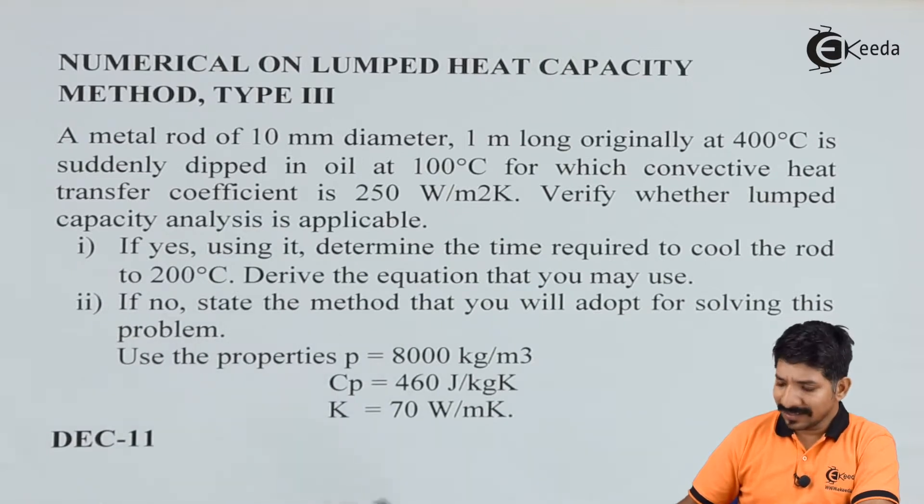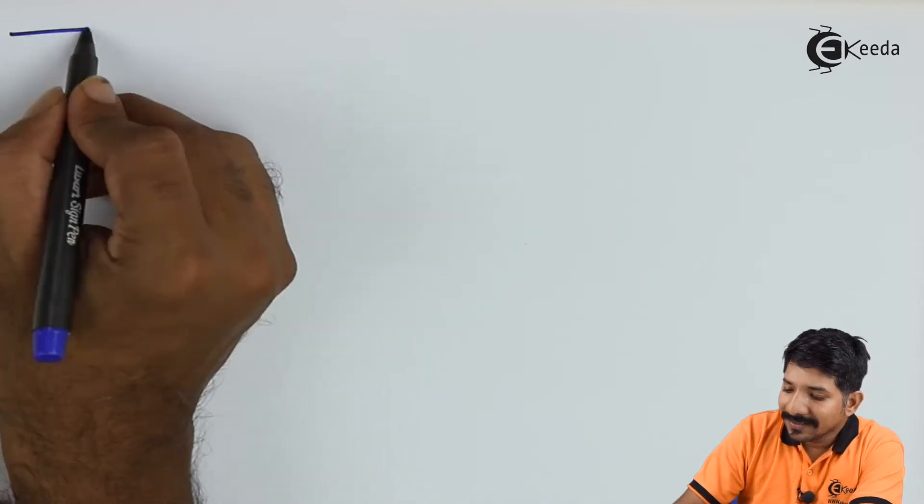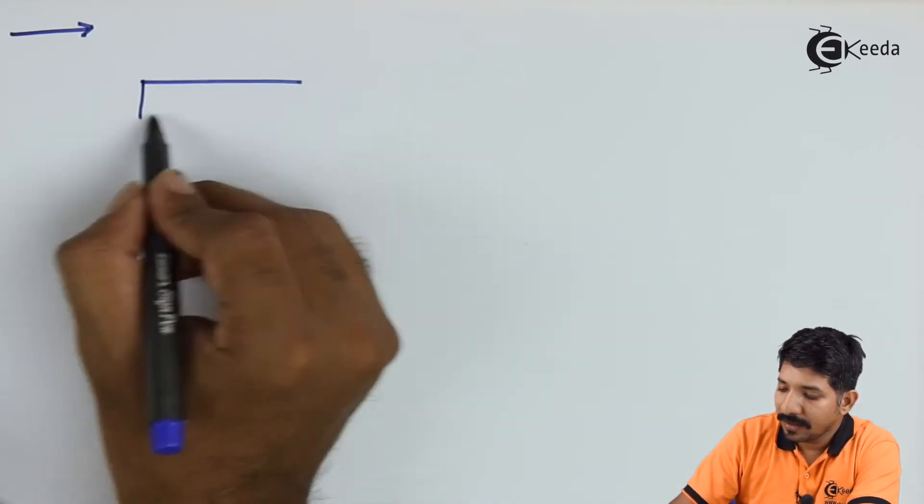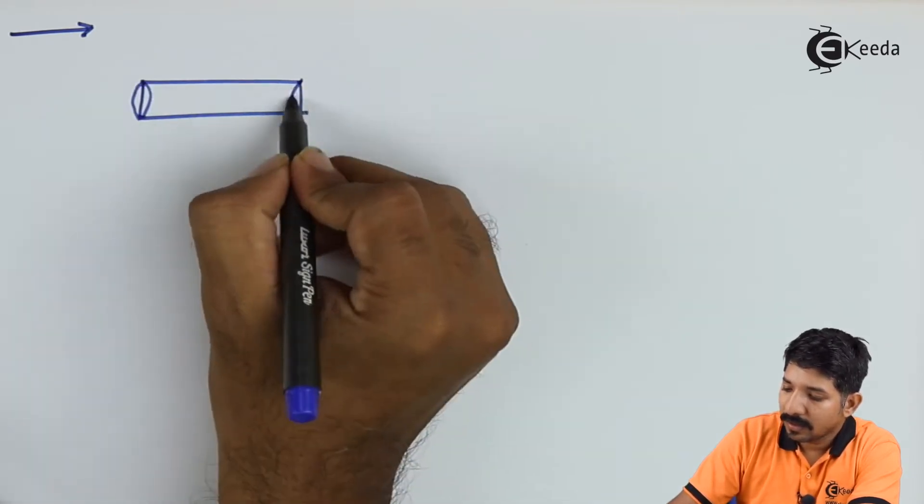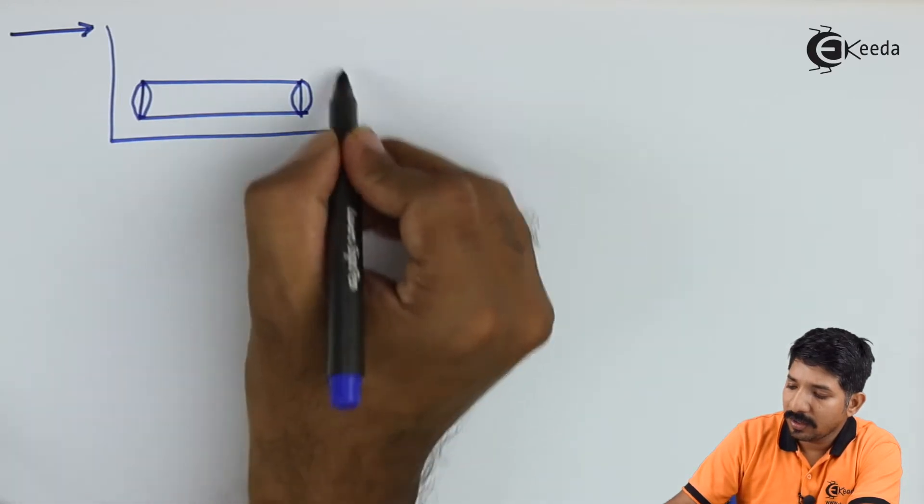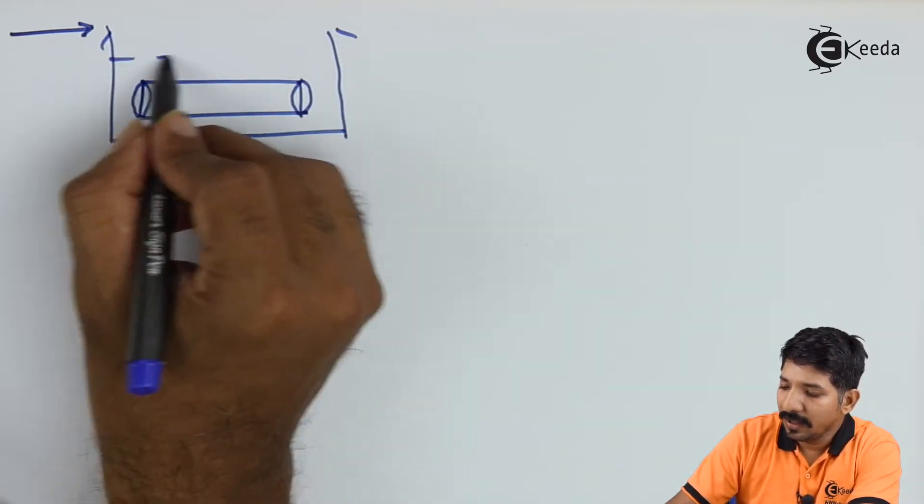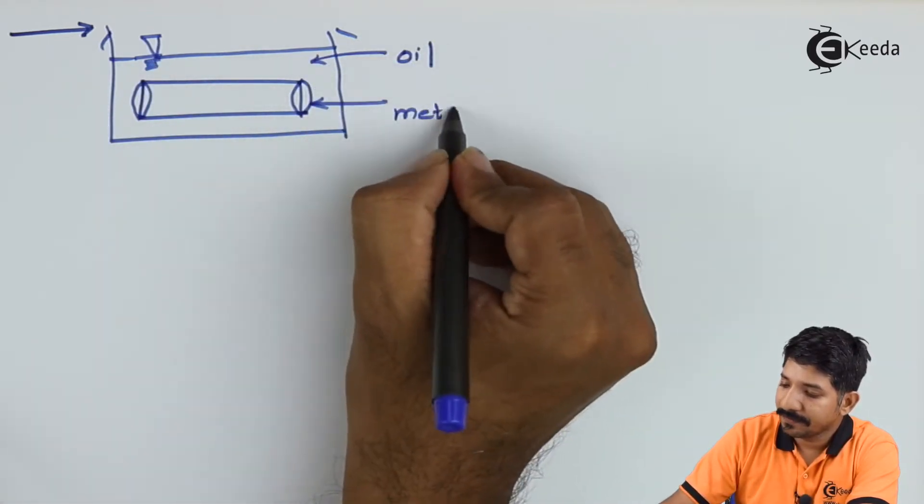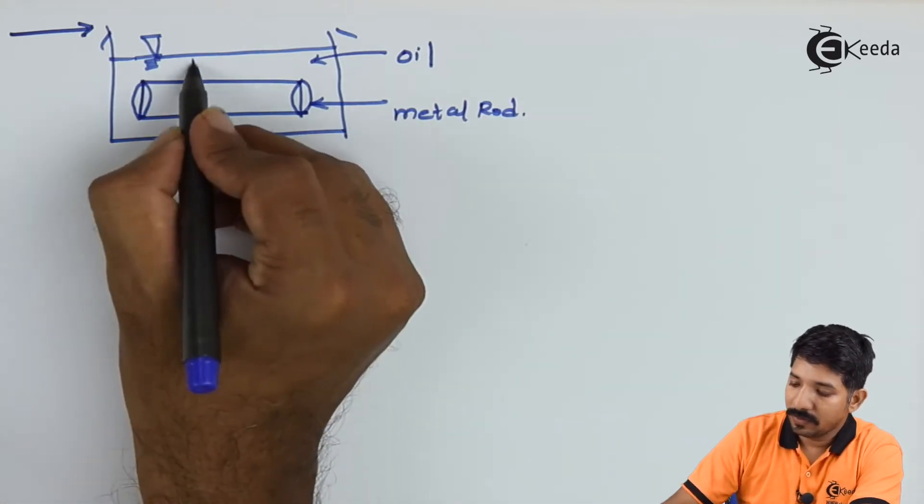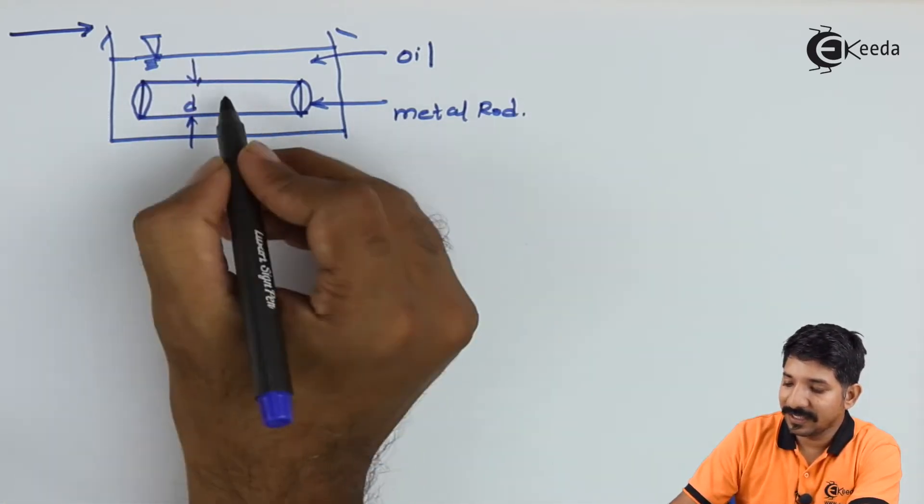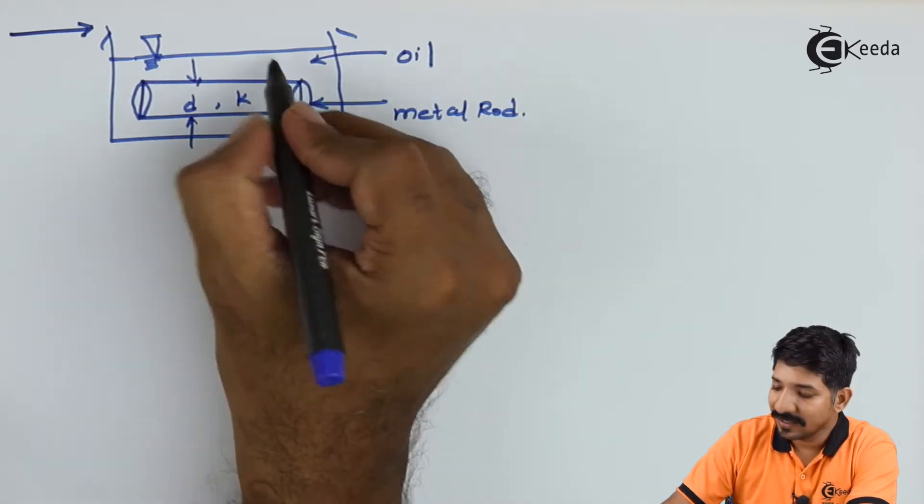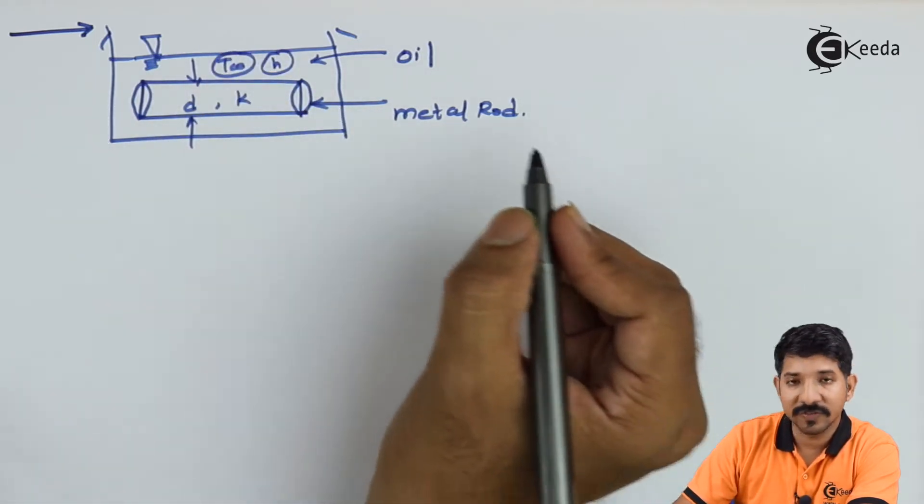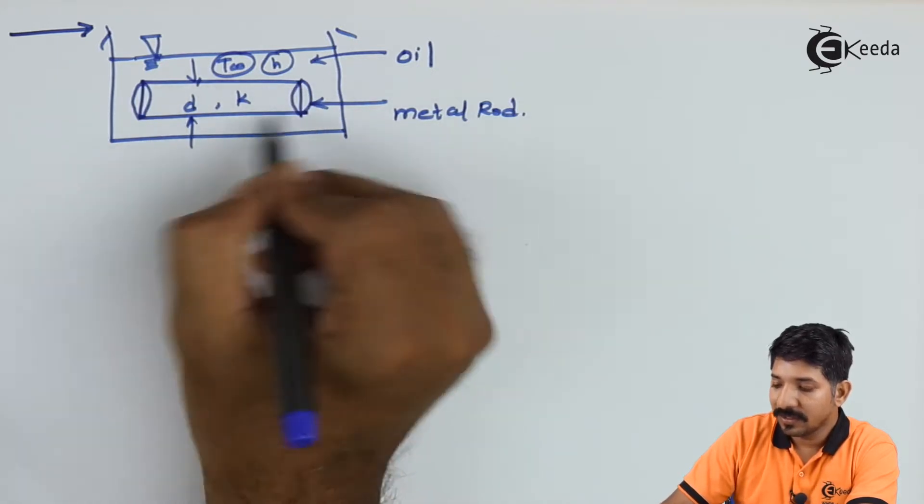So let us start solving the given problem. Let us write down the things that they are given. They have taken a rod and placed this rod inside an oil. This is the oil and this is the metal rod. The rod dimensions are D, the value of K is the thermal conductivity of rod, H is the heat transfer coefficient of the oil, and T infinity is the temperature of the oil which surrounds the rod.